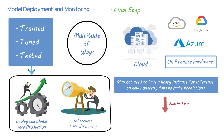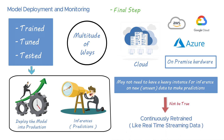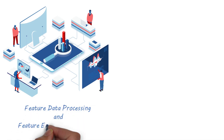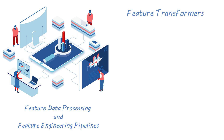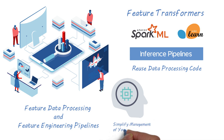This may not be true for models that need to be continuously retrained, like real-time streaming data. Always consider building feature data processing and feature engineering pipelines with a suite of feature transformers readily available in the Spark ML and scikit-learn framework containers, and deploy these as part of the inference pipelines to reuse data processing code. This will simplify management of your ML processes.